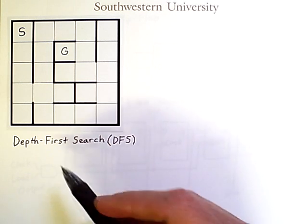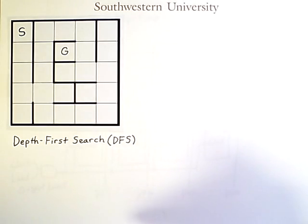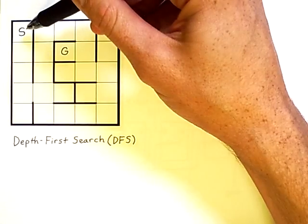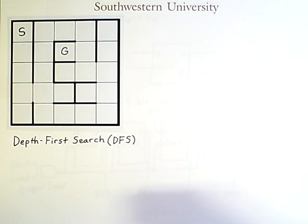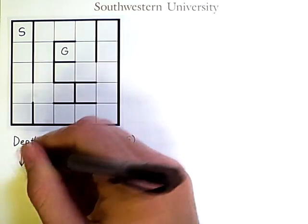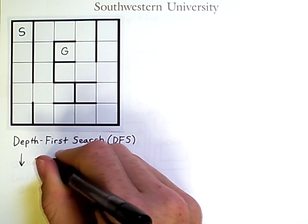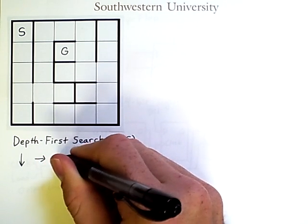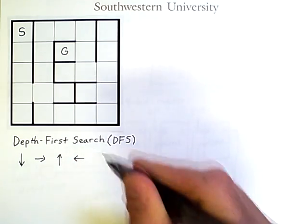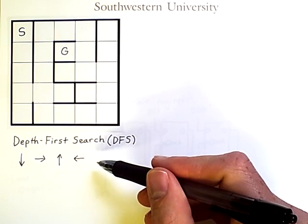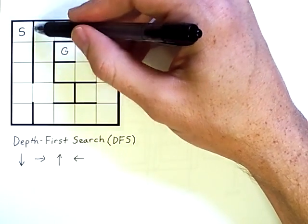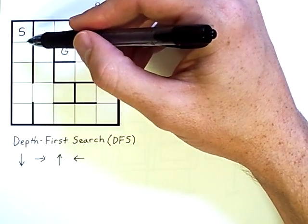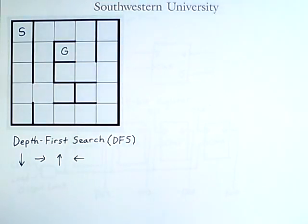The first search algorithm I'll be teaching you about is depth-first search, demonstrated with a simple maze where this is the start point and this is the goal. The actions available to the agent are to move down one step, to move right one step, to move up one step, and to move left one step. Not all of these actions will be available in every state — clearly, moving up, left, or right from the starting position is impossible because of the walls, so the only available option is down.